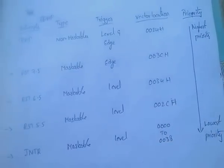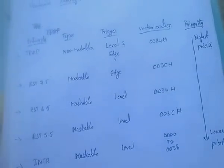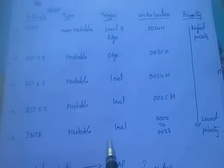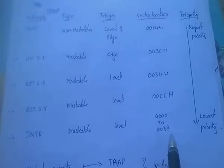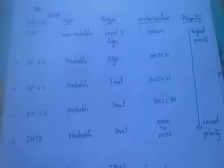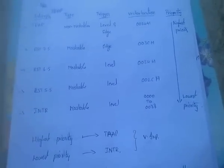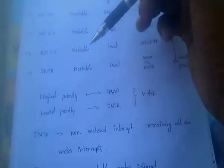INTR is a maskable interrupt with level triggering. Its vector locations include 0000H to 0038H, and it has the lowest priority. INTR is a non-vectored interrupt, while all other hardware interrupts are vectored.